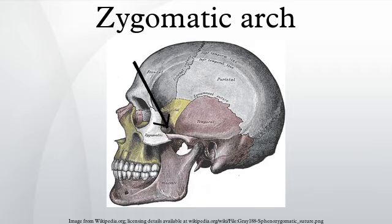The zygomatic arch, or cheekbone, is formed by the zygomatic process of the temporal bone and the temporal process of the zygomatic bone, the two being united by an oblique suture.